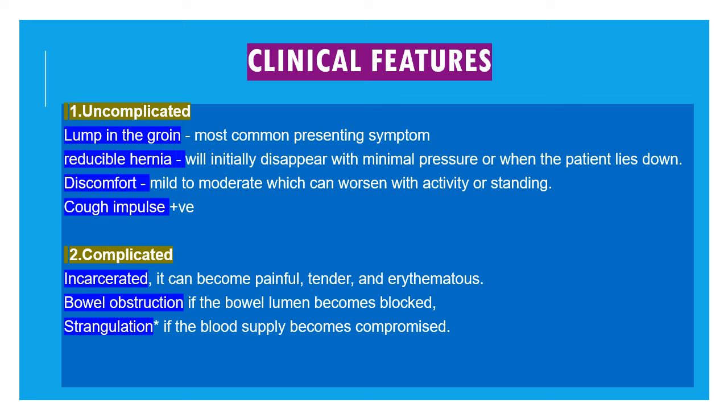The clinical features of inguinal hernia fall into two categories. In uncomplicated hernia, the most common presenting complaint is a lump in the groin. This lump is reducible — it disappears with minimal pressure or when the patient lies down supine. There may be some mild to moderate discomfort, worse with activity or standing. Very rarely do uncomplicated hernias produce severe pain.